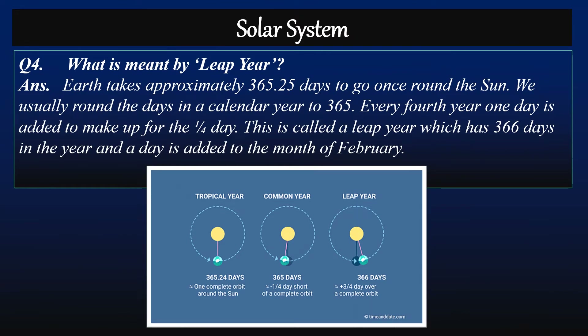Question four: What is meant by a leap year? Answer: Earth takes approximately 365.25 days to go once around the sun.